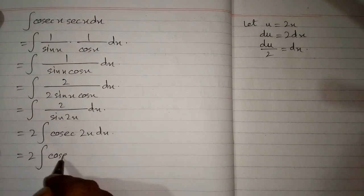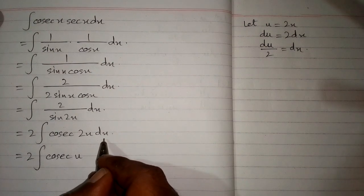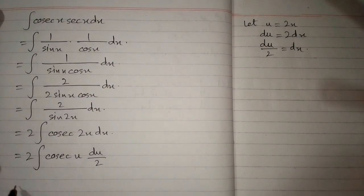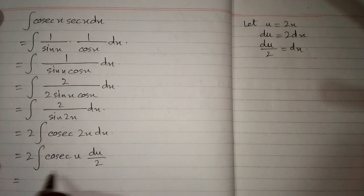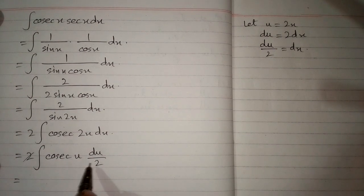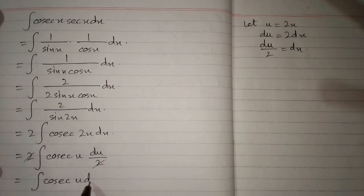Now we will put u in place of 2x and in place of dx we will put du upon 2. Now this 2 and this 2 can be cancelled, so we will find the integral of cosecant of u du.